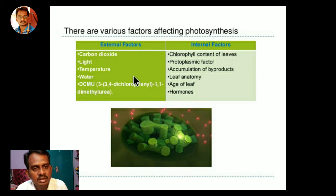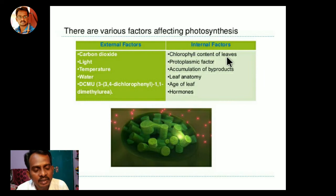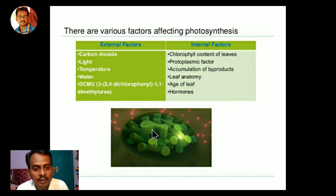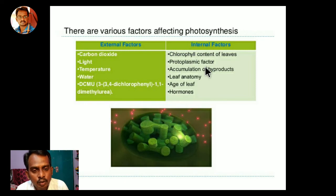Another external factor is DCMU — dichloro phenyl dimethyl urea — a chemical substance that is also one of the factors affecting photosynthesis. We will discuss its role in higher classes. The internal factors include chlorophyll content of the leaf, which is the main factor, because it is the main part of the plant that helps in the production of glucose molecules. Protoplasmic factors — components present in the cytoplasm of the cell — and accumulation of byproducts are also internal factors.